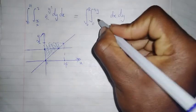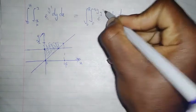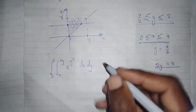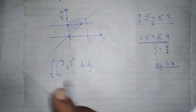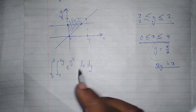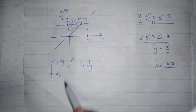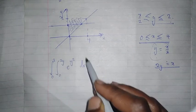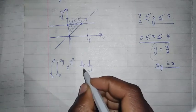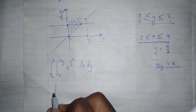What happens to the function? The function doesn't change, it remains the same, e to the y squared. So now I'm going to integrate. The first thing you need to do when you're integrating a double integration is to first deal with the inner integration.